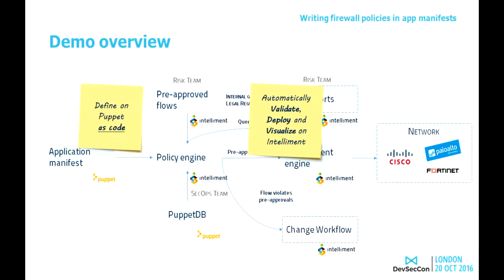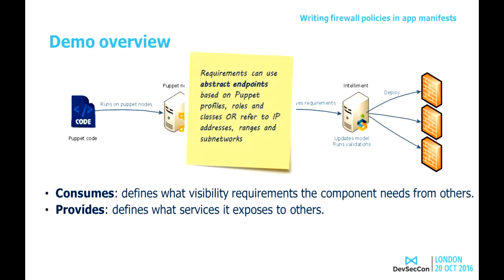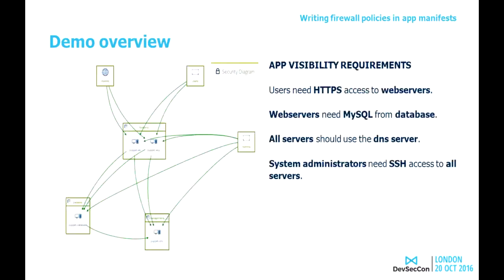With Puppet, we can define as code everything we need. We validate, deploy, and visualize on each element. The Puppet code is an extension into the Puppet definition that says what we consume and want to provide. You can define IPs, profiles, roles, etc. This is the example overview — a huge network. We are going to put an application on the front network. Everything needs communication across several services. User needs HTTPS to the web server. Web server needs MySQL. All servers use DNS. System administrators need SSH.